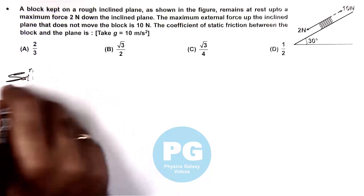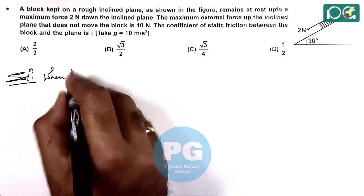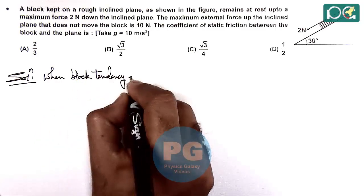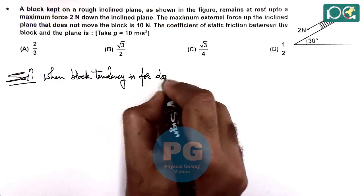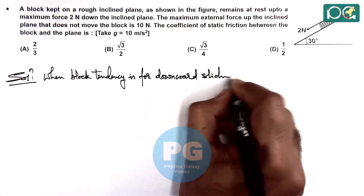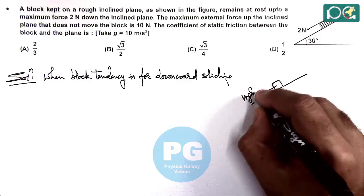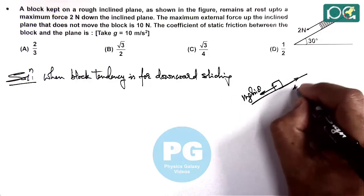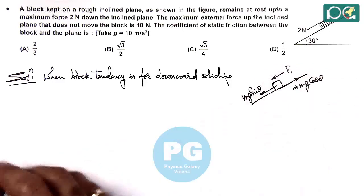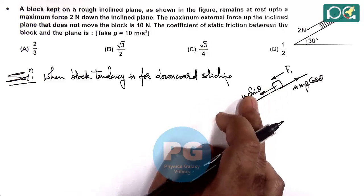We will analyze two cases separately. When the block has a tendency for downward sliding, the block experiences Mg sin θ in the downward direction and friction μ Mg cos θ in the upward direction. The downward force is F1, and the maximum limit of F1 at which it can slide is 2N.